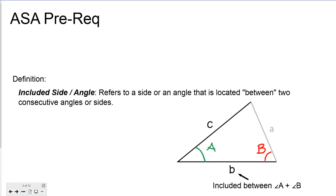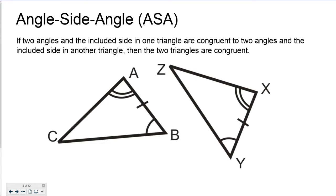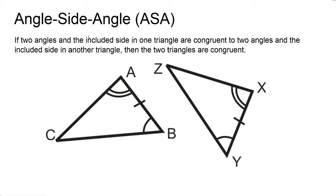If two angles and the included side in one triangle are congruent to two angles and the included side in another triangle, then the two triangles are congruent. Here's an example.